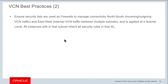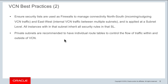Continuing on VCN best practices: when creating security lists, use them as firewalls to manage your connectivity both north-south and east-west. You can manage what kind of incoming and outgoing connections work out of the VCN, and also manage internal communication between subnets. Each subnet can have a maximum of five security lists attached to it, and all the security rules in those lists are inherited by each individual host in that subnet.